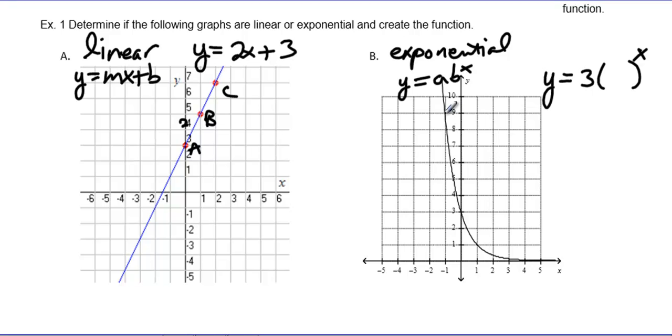Let's look at some points. I have this point right here, which is (-1, 9). I have that point right there, which is (0, 3). I have this point right here, which is (1, 1).